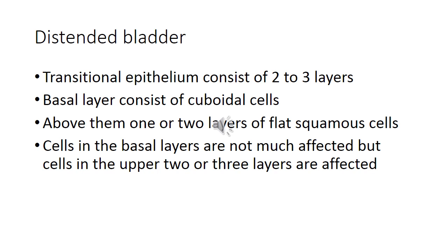In the distended bladder, the transitional epithelium consists of only 2 to 3 layers. The basal layer remains made up of cuboidal cells. Above them, instead of 5 to 6 layers of polygonal cells, there are only about 1 or 2 layers. On top of them are flat squamous cells — these are actually the dome-shaped cells that have been stretched and taken up the appearance of squamous cells. The cells in the basal layer are not much affected, but cells in the upper 2 or 3 layers are stretched to give a flat squamous appearance.